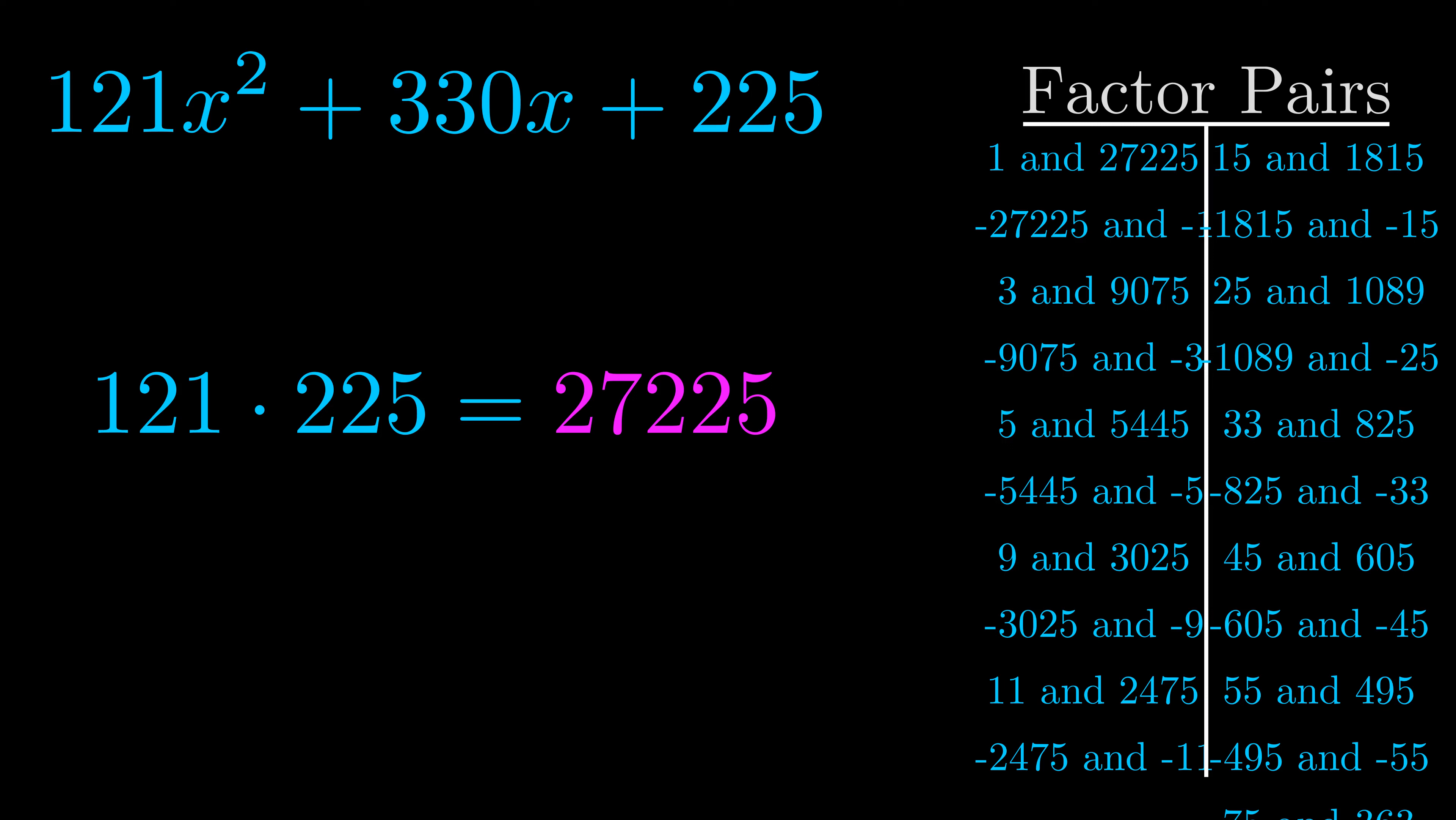The b value is the coefficient on the x term. That's the middle term, the one that we haven't done anything with yet. And really this is the only factor pair that we need.